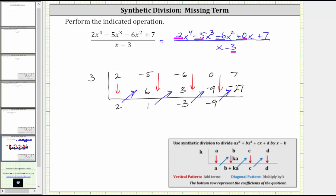And finally, we add vertically. Seven plus negative twenty-seven is negative twenty.